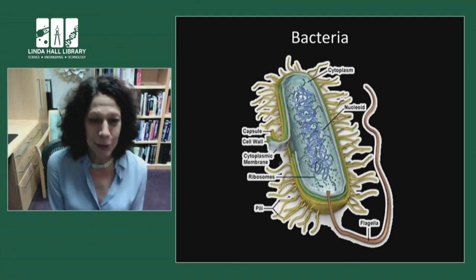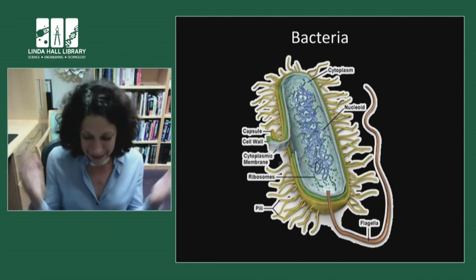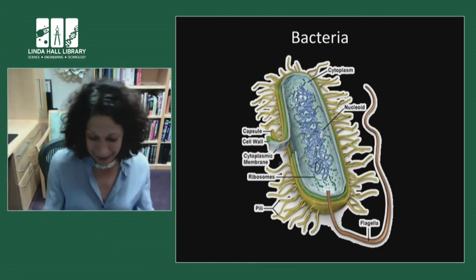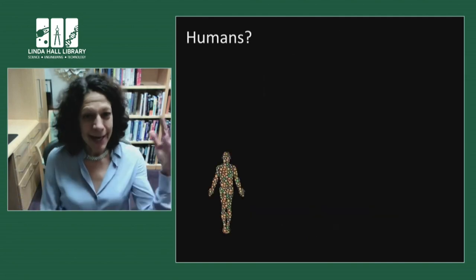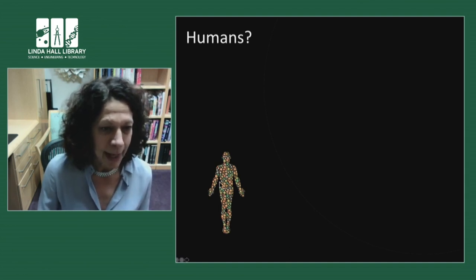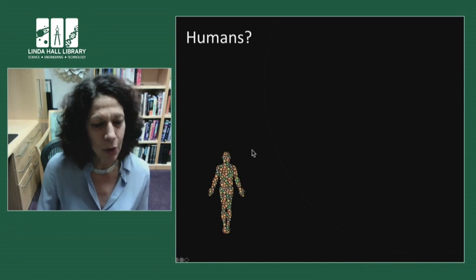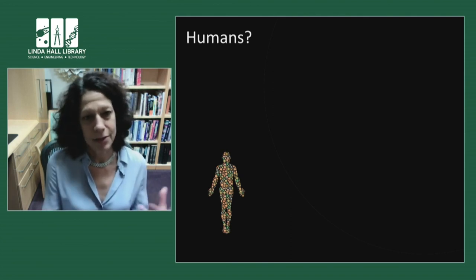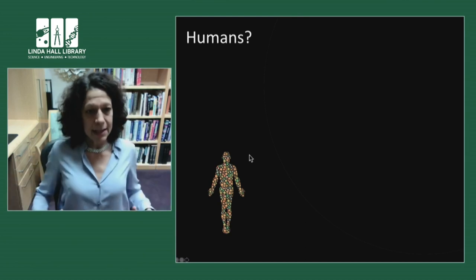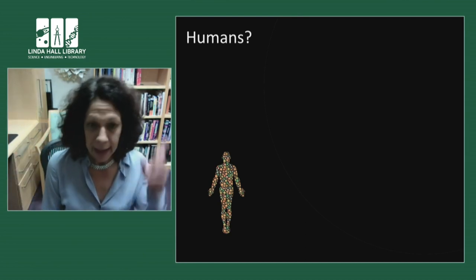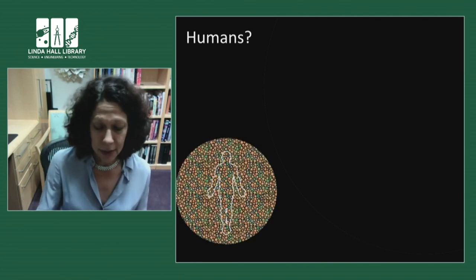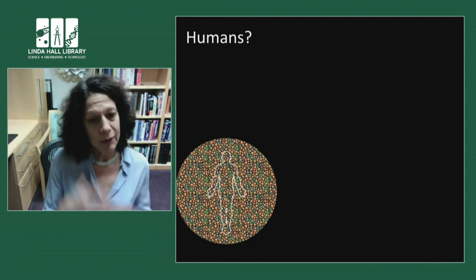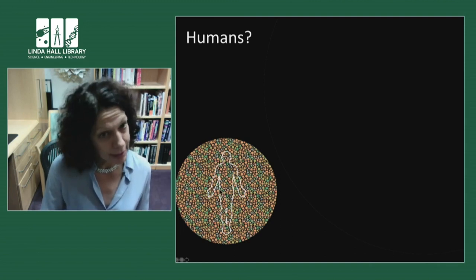Before I get into that, I want to make sure you know something about your relationship with bacteria. On this slide I've made a cartoon representing a human being, with little circles representing the human cells that make up your body — some trillions of cells. At any time in your life, you have 10 times more bacterial cells than human cells in you or on you. So if you use this math, you're 10% human and 90% bacterial.